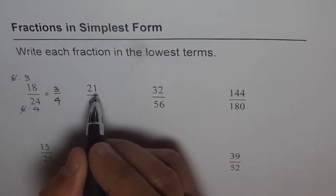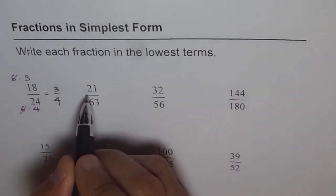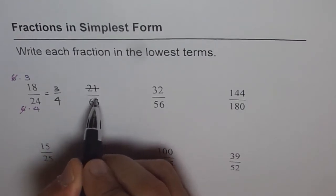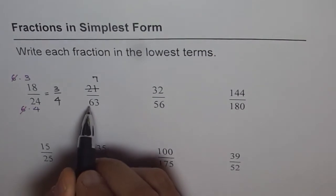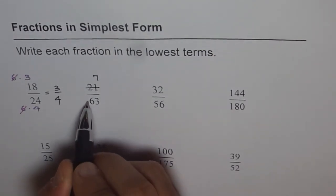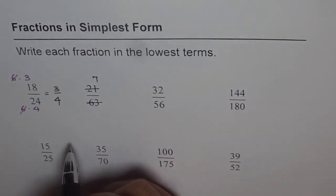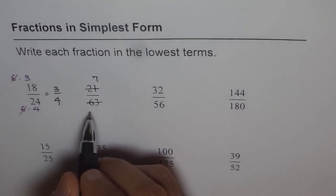Let us divide both by 3. If I divide 21 by 3, what do I get? 3 times 7. So I get 7 here. Now let me divide 63 by 3.